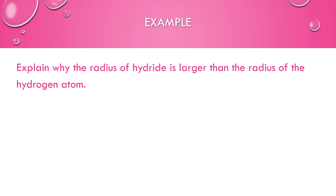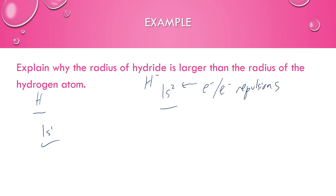For this example, explain why the radius of hydride (H⁻) is larger than the radius of a neutral hydrogen atom. If I look at the electron configuration, a neutral hydrogen atom is just 1s¹ — one proton, one electron. But hydride has gained an electron to fill up its energy level, so it's 1s². They still have the same number of energy levels and the same number of protons — one proton is what makes it hydrogen. The extra electron makes it larger because of electron-electron repulsions. Since the only difference is the number of electrons in that orbital, the additional electron causes more repulsion, which gives it a larger radius.